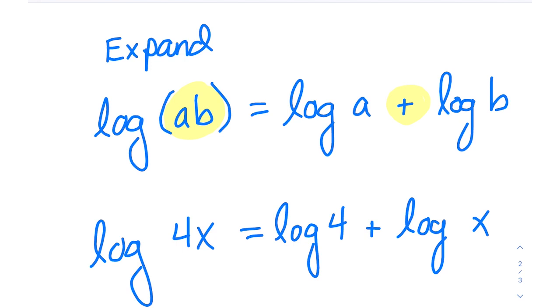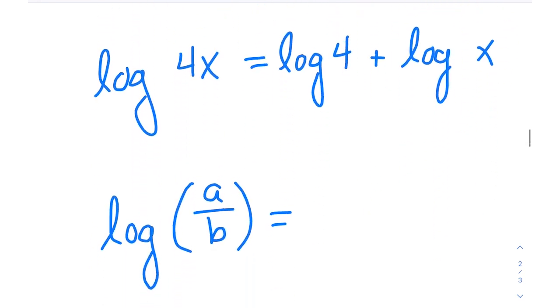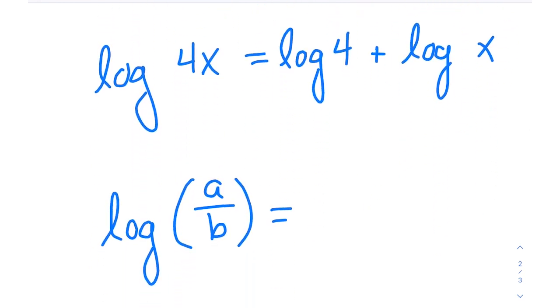Next, we're going to take a look at a simple example of division of logs. When you have the general form log a divided by b, just like we mentioned and just like you might intuitively guess based on your knowledge of exponent rules, log of a over b—since you're dividing—when you go to expand it, upon expansion that division is going to convert into subtraction. You'll have log of a minus log of b for the expanded form.